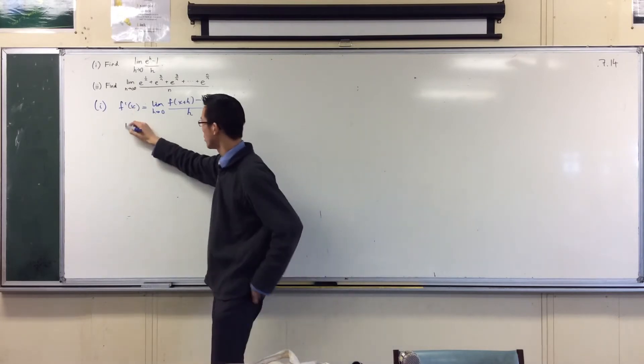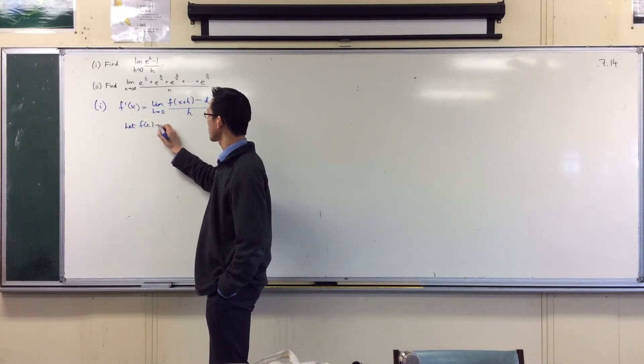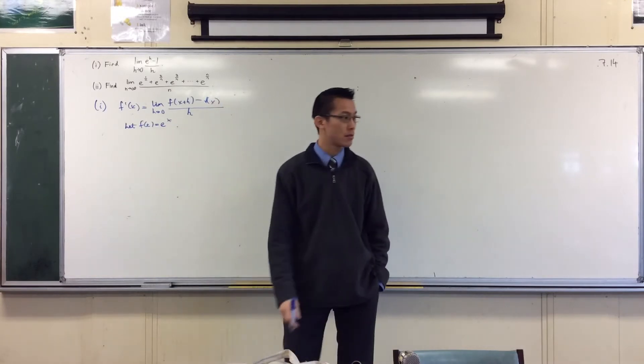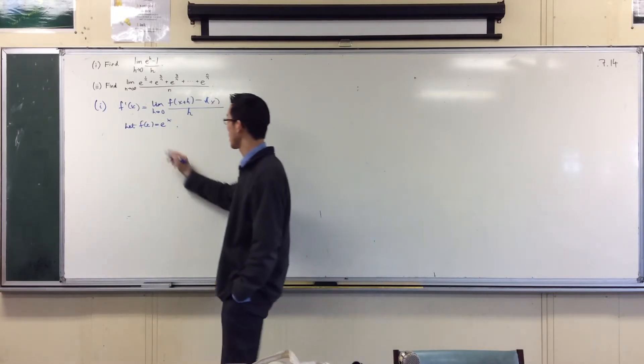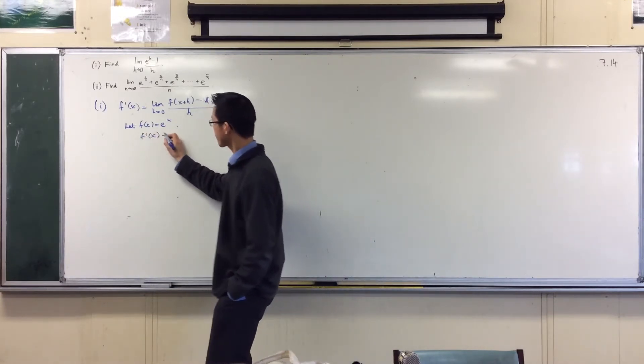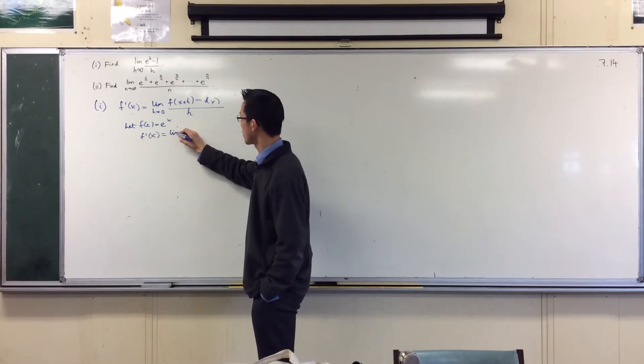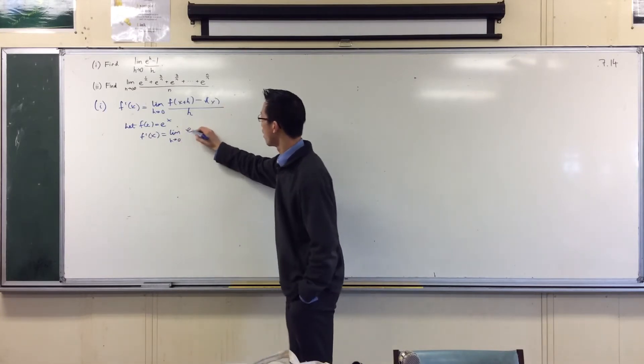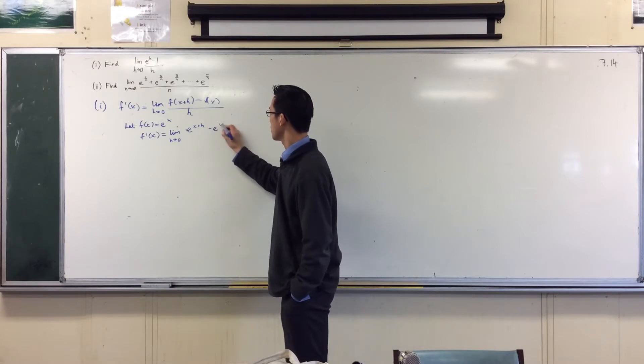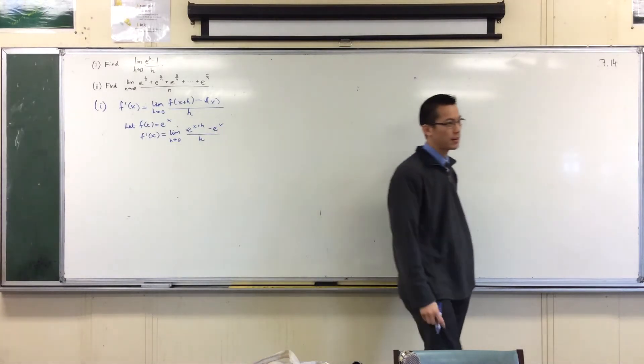So let's consider, let f of x equal e to the x. Let's just do it from first principles. So f dash will equal the limit as h approaches zero of, and you get this. No dramas so far.